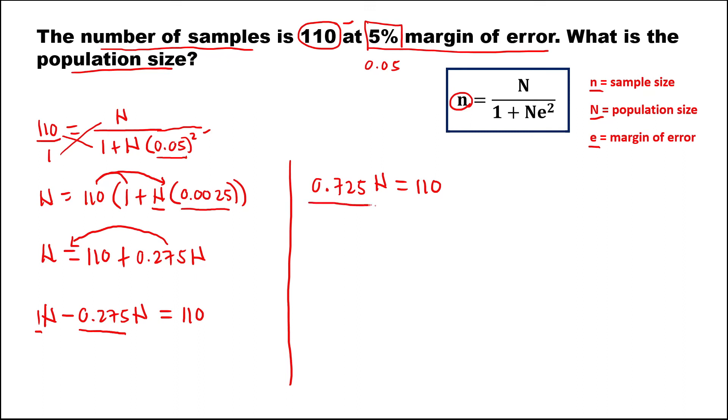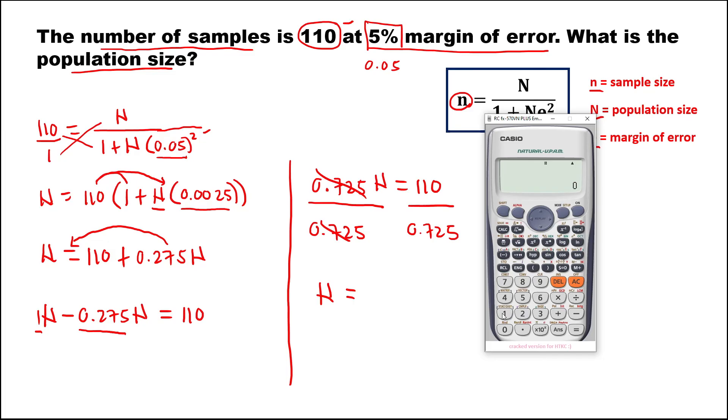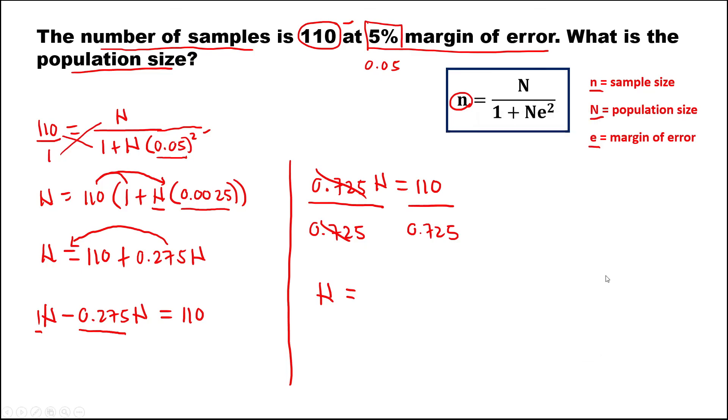To solve for N, divide both sides by 0.725. Therefore N, or the population size, equals 110 divided by 0.725. The population size is equal to 152.